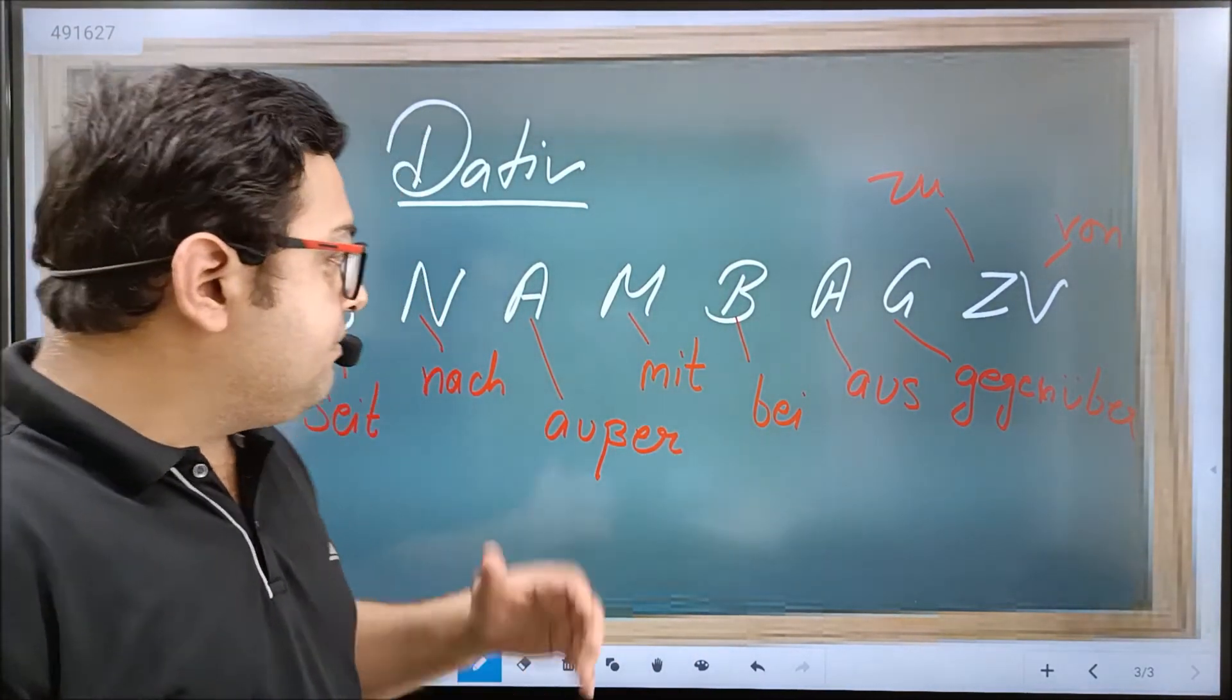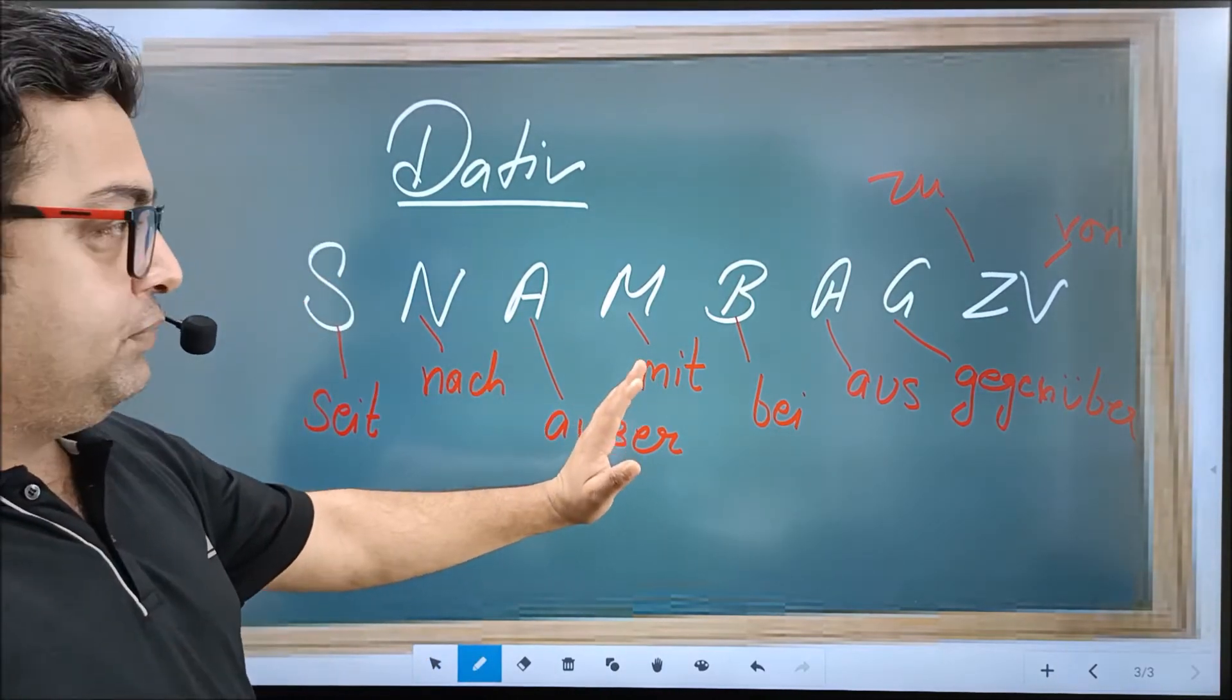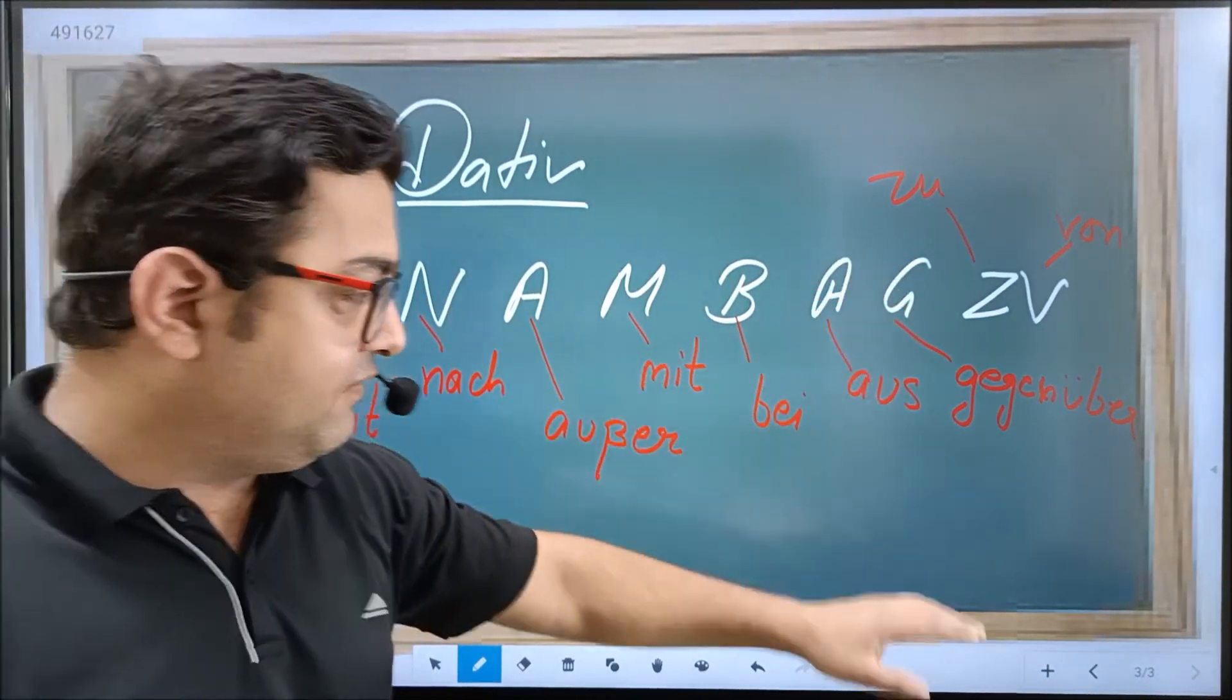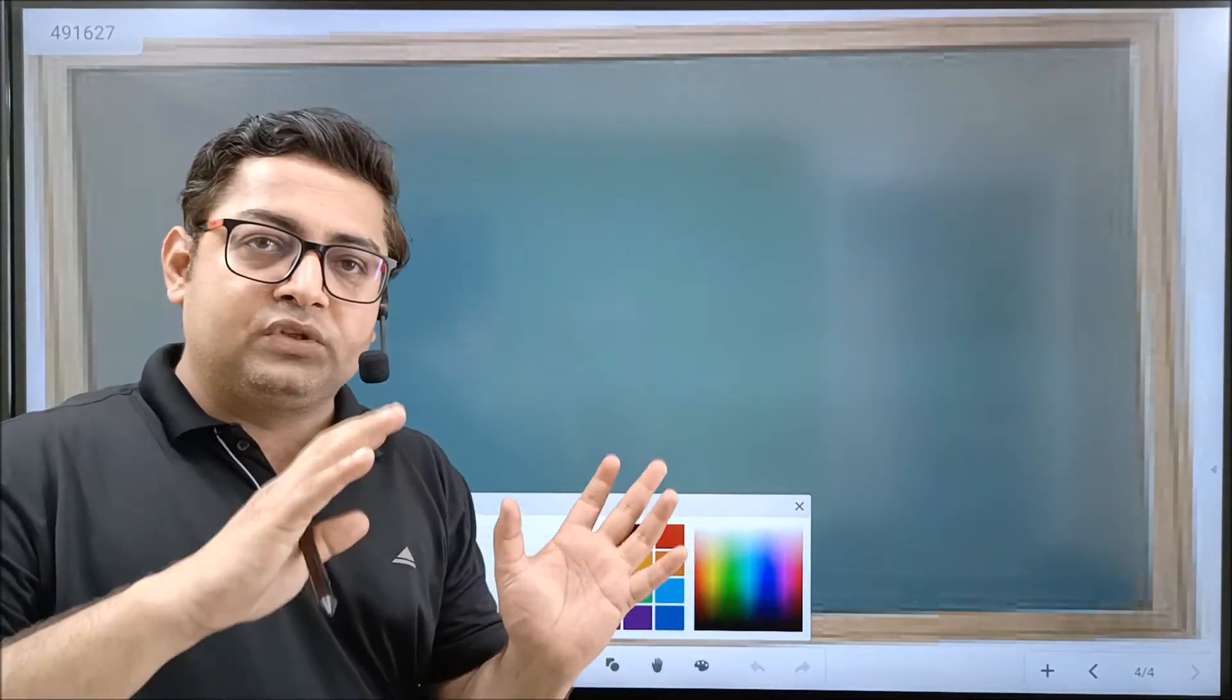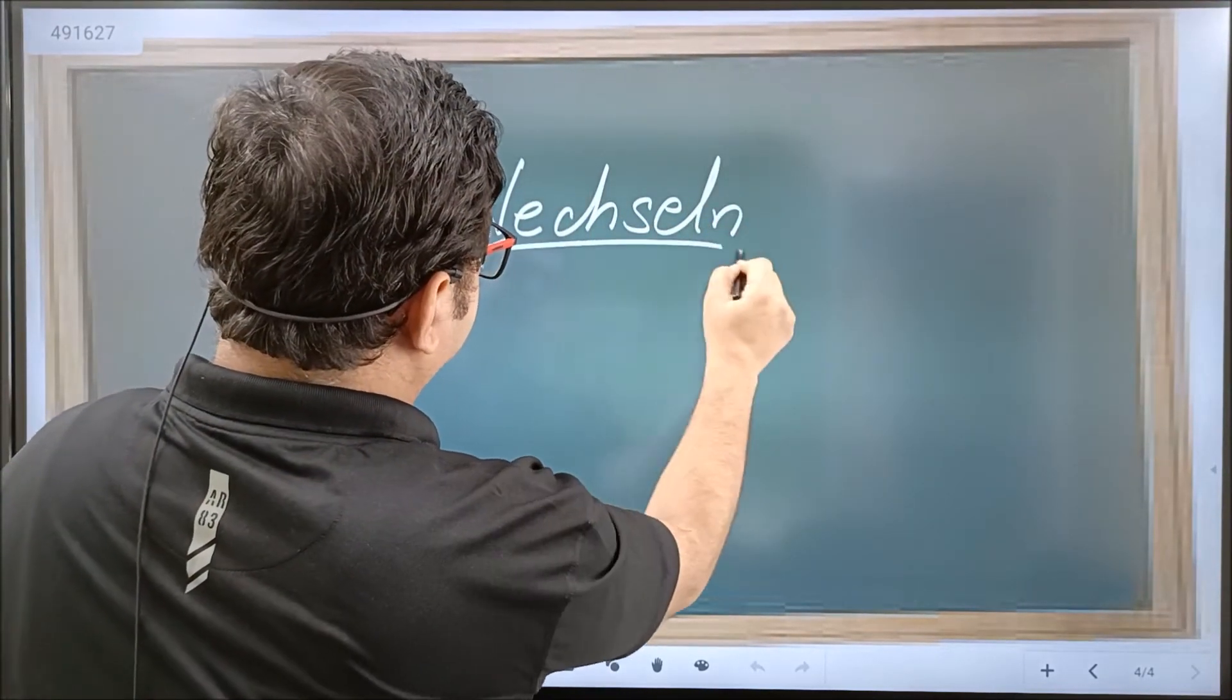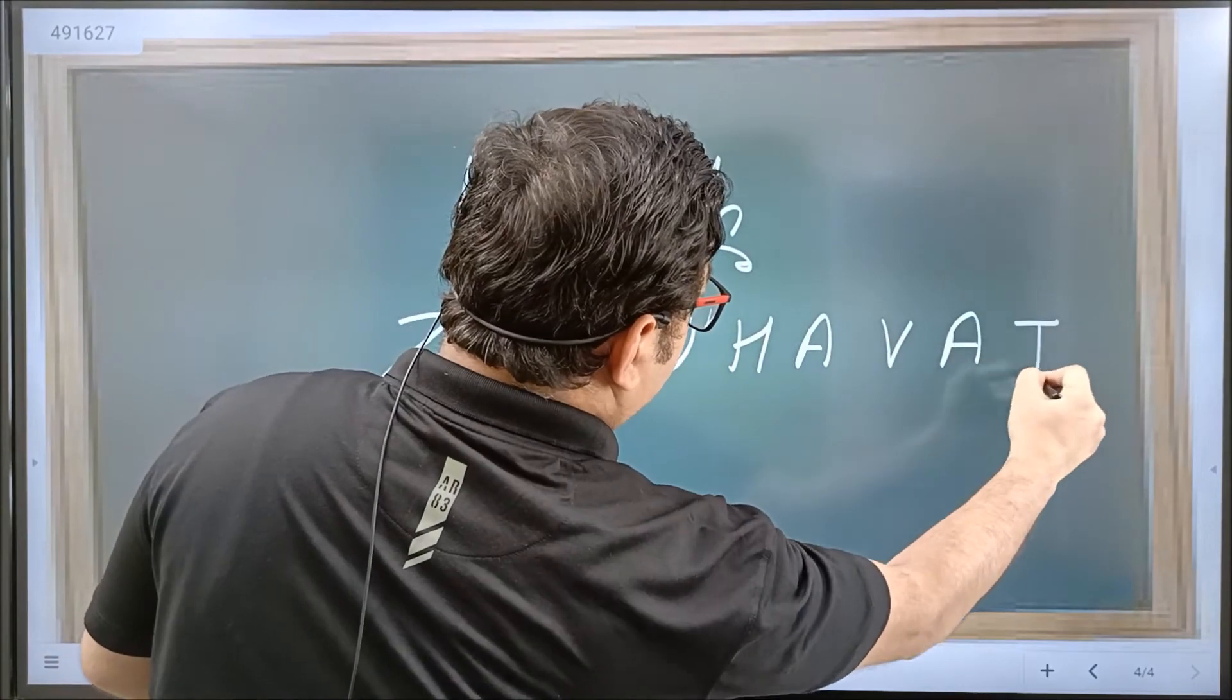How these prepositions are used, we are going to talk about in later sessions. But here in this session, we are giving you tips and tricks to memorize the prepositions. Accusative was GOD BUFFET, dative is SNAMBAG ZIVI. And last but not least, the prepositions which are used as accusative and dative, we call it Wechsel prepositions, and you can learn these prepositions as SUNUL HAVAI.